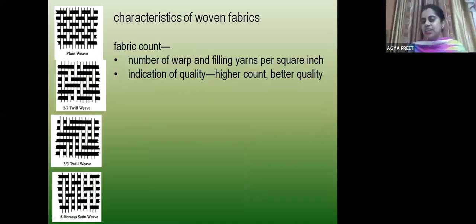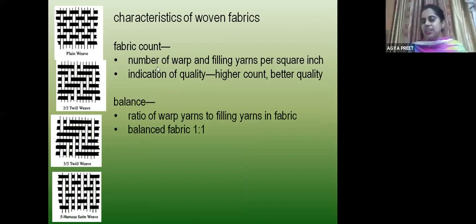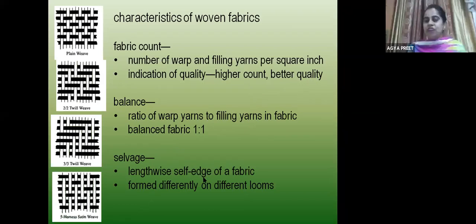Fabric count is defined as the number of warp and filling yarns per square inch — the higher the count, the better the quality. When warp and filling yarns are in a ratio of 1:1, the fabric is called balanced. The selvedge is the lengthwise self-edge of the fabric — it is made so that the yarns don't fray out. Every fabric has a selvedge, and it is formed differently on different looms.